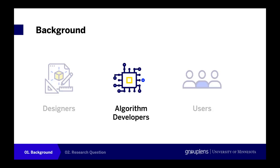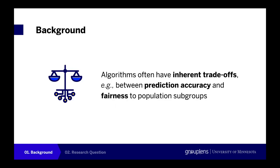On the other hand, algorithm developers often have expertise in understanding algorithm capabilities. However, they don't have good methods for sharing their knowledge to help the design process. One of the challenges in understanding algorithms for product design is understanding the inherent trade-offs between different system criteria for different design goals. For example, in a risk assessment tool designed to aid judges' decision-making on whether to detain or release defendants, there are inherent algorithmic trade-offs between prediction accuracy and unfairness to different population groups.